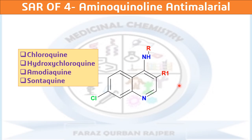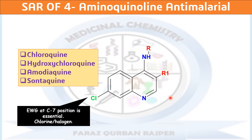Now we have to explore the different functional groups present at various positions in the 4-amino-quinoline ring nucleus. At the 7th position, it is known in the literature that an electron withdrawing group is essential for the high potency or activity of the anti-malarial drug. In this nucleus we have chlorine, which is one of the halogen electron withdrawing groups, and it is essential for the activity. This chlorine at the 7th position is a common structural feature of all these drugs: chloroquine, hydroxychloroquine, amodiaquine, and santaquine.